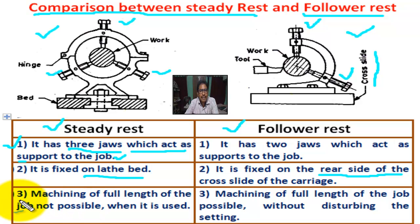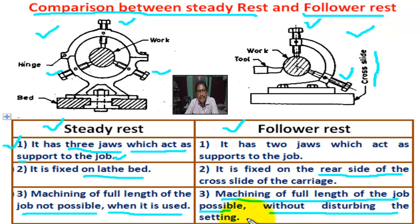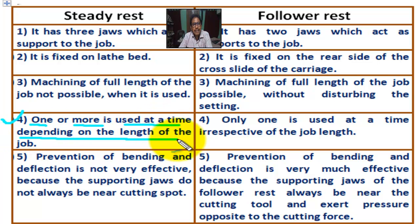Number three for steady rest: machining of the full length of the job is not possible when it is used. Number three for follower rest: machining of the full length of the job is possible without disturbing the setting. Number four for steady rest: one or more than one is used at a time depending on the length of the job. Number four for follower rest: only one is used at a time, irrespective of the job length.